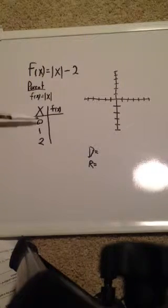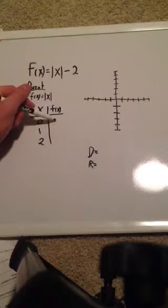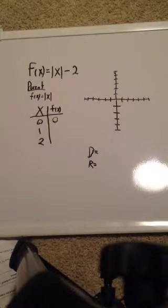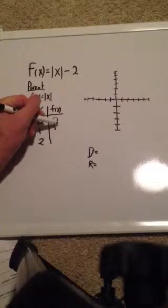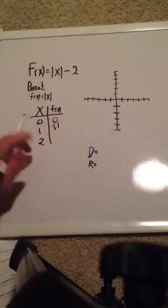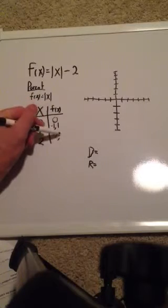So we're going to plug in our x values. For 0, absolute value of x, absolute value of 0, that equals 0. Absolute value of 1, negative 1 comma 1. Absolute value of 2, negative 2 comma 2.